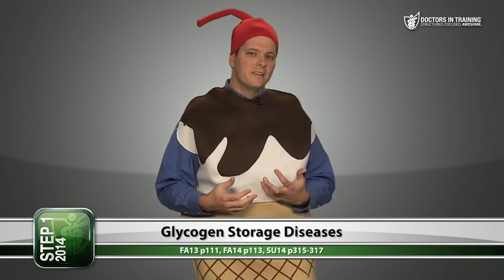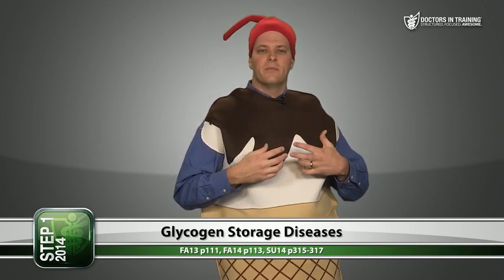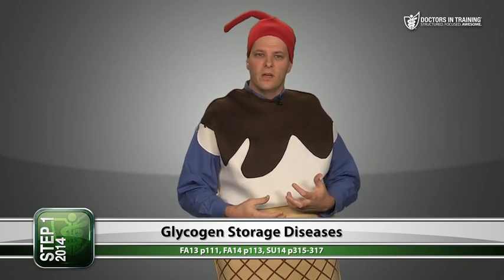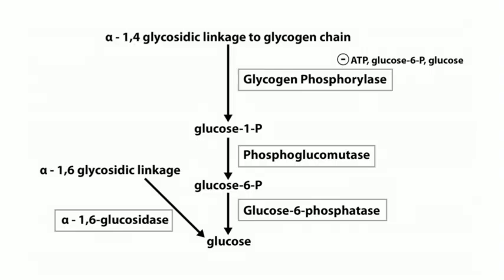There are diseases resulting from deficiencies of enzymes in the glycogenolysis pathway, collectively called glycogen storage diseases. There are about 11, but only four are important. The first is McArdle disease — glycogen storage disease type 5 — which is a deficiency in glycogen phosphorylase.